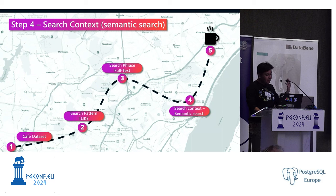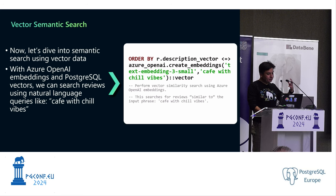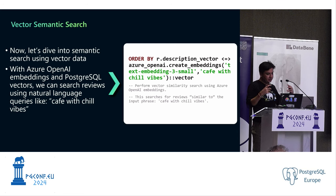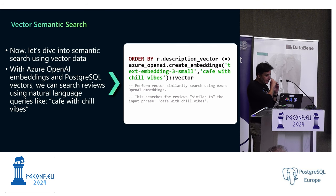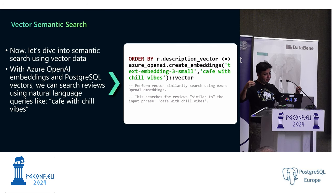Now that we understand vectors, let's go back to our search. With the data vectorized, let's dive into semantic search. It's the same table — now I have a vector column added called description_vector. When doing a search, instead of a WHERE clause, I'm passing the vibe I was looking for — 'cafe with chill vibes' — the contextual element I want in my search — in an ORDER BY clause.